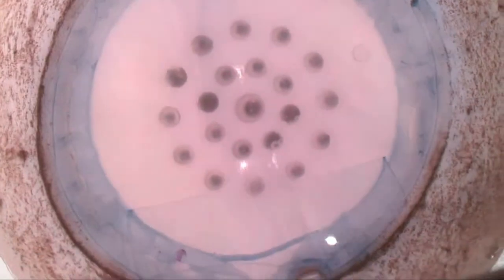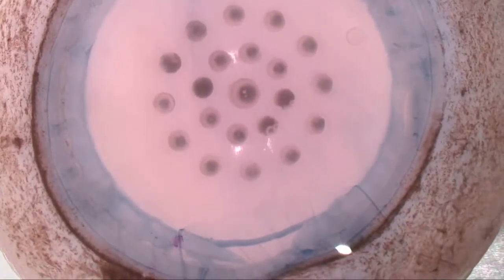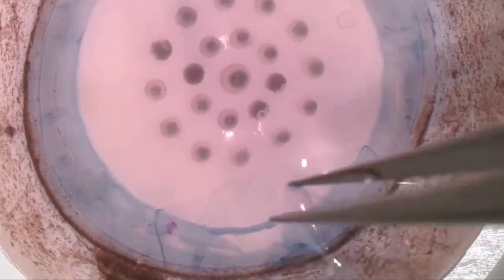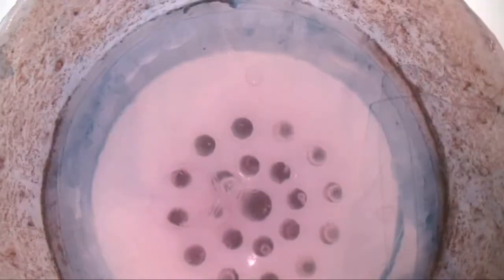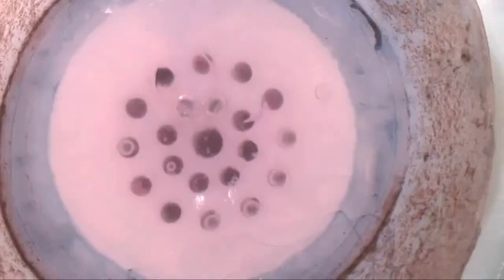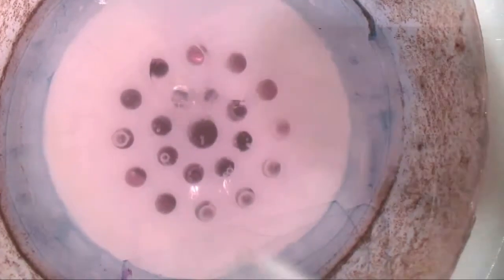First, the endothelium and Descemet complex is peeled off from the donor tissue and laid to the side. Then, a dermatologic 3mm trephine is used to punch the bare stroma full thickness and the endothelium is placed back into position.